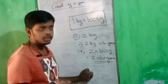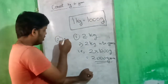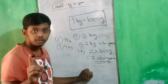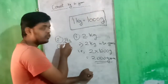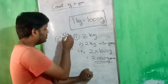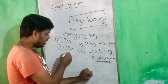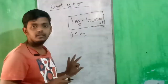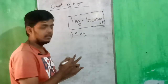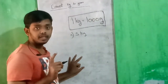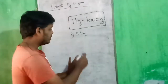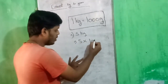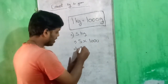Remember: 1 kg equals 1000 grams. If someone asks you about 2 kg, 3 kg, or 4 kg, you have to multiply the given value with 1000. Here is another example: the question is 5 kg. We have to convert 5 kg into grams. As said before, multiply by 1000, so 5 × 1000 = 5000 grams.